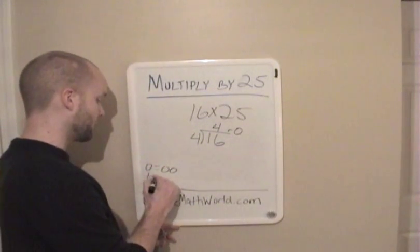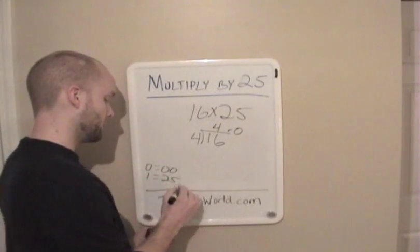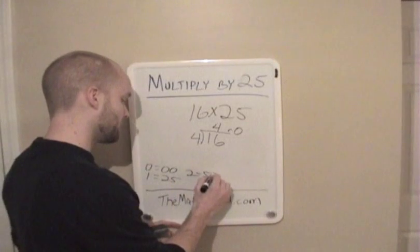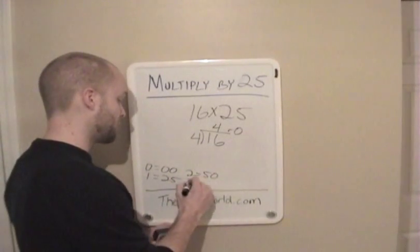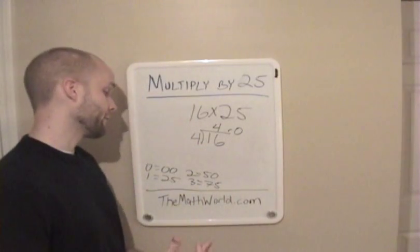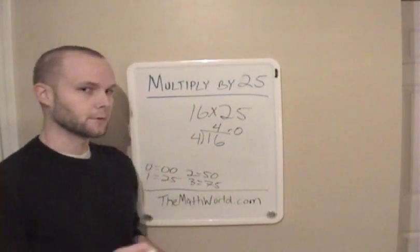If you have a remainder of 1, you're going to add 25. If you have a remainder of 2, you're going to add 50. If you have a remainder of 3, you're going to add 75. And you can't have a remainder of 4 since you're dividing by 4.